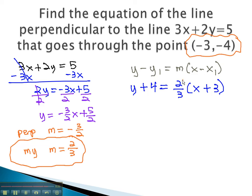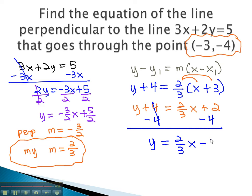To get intercept form, we distribute through the parentheses, and y plus 4 equals 2 thirds x plus 2. Subtracting 4 from both sides to get the y alone, the perpendicular line is 2 thirds x minus 2.